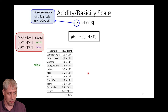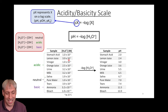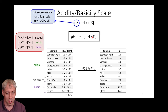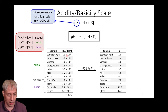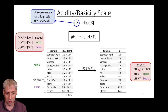Pure water sits at 1.0×10⁻⁷. Taking the negative log of these concentrations converts them to the pH scale — for example, 1×10⁻² becomes pH 2, and 3.9×10⁻⁸ becomes pH 7.4. This is purely for convenience: instead of dealing with exponents, we have a simple numerical scale. pH = 7 is neutral, less than 7 is acidic, and greater than 7 is basic.